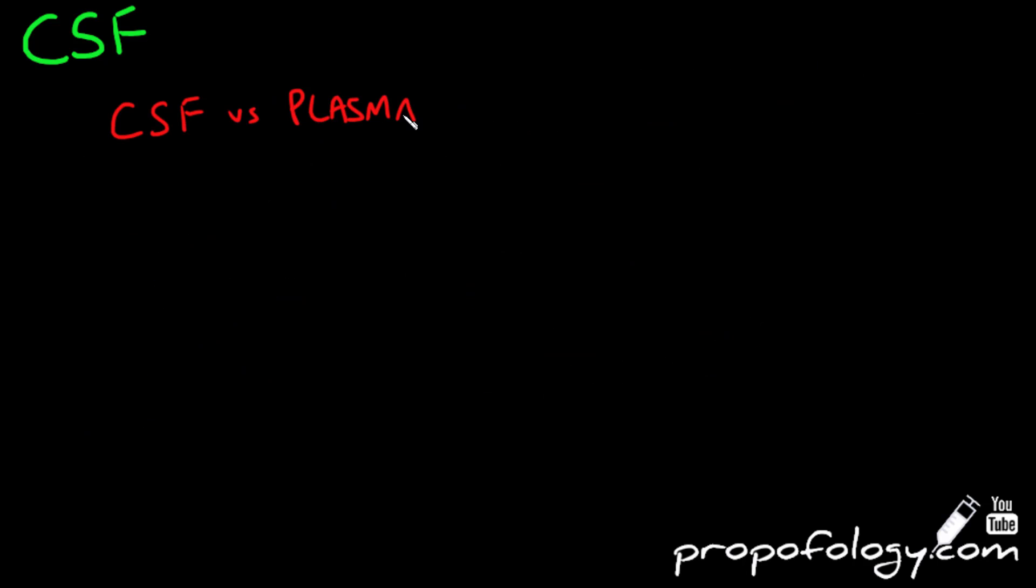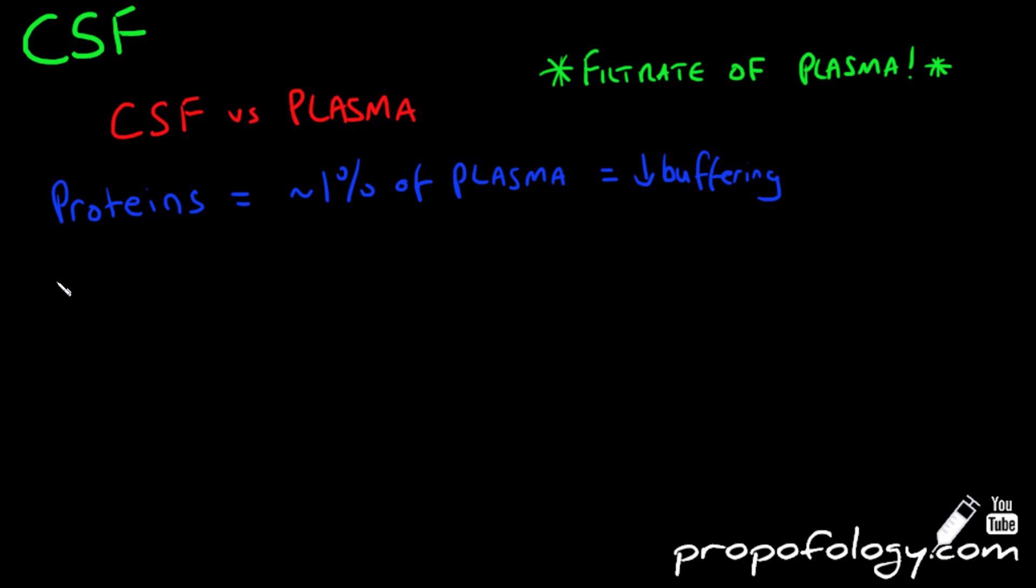If we compare the composition of CSF and plasma, you'd see that CSF proteins are about 1% that of plasma, resulting in reduced buffering capability. CSF calcium levels are about half that of plasma. CSF glucose levels are about 60% that of plasma, which is why you should correlate it with a blood glucose level at the same time. CSF chloride and magnesium levels are higher than that of plasma.